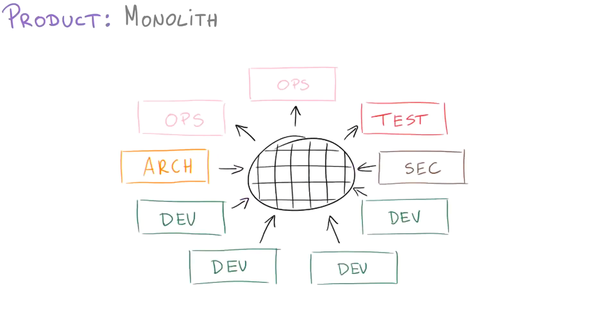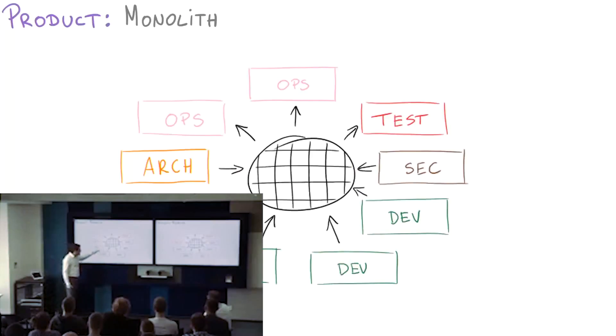First thing we need to discuss is products. From DevOps perspective, there are two types of products. The first one is monolith. What is the monolith? Think about this as a single code base, maybe divided inside some classes. Maybe different teams are responsible for different pieces of that, but it's still one big thing to which all other teams somehow add value to.